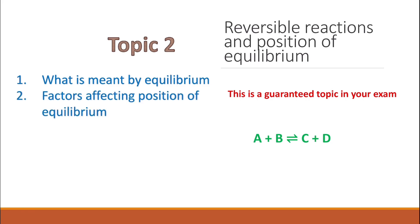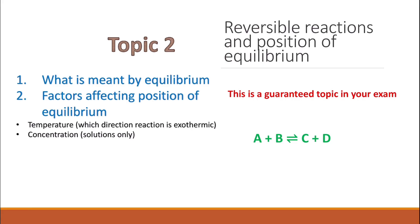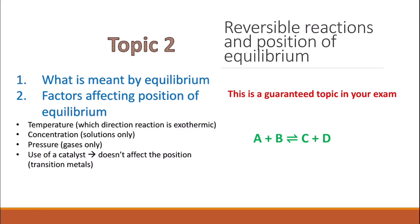You need to know the different factors that affect the position of equilibrium. For temperature, increasing it will push the reaction towards the endothermic direction. For concentration (solutions only), increasing the concentration of the reactant pushes the reaction towards products. For pressure (gases only), increasing pressure pushes the reaction to the side with the lower number of moles. A catalyst does not affect the position of equilibrium — it only allows equilibrium to be reached faster by increasing the rate of both forward and reverse reactions equally.